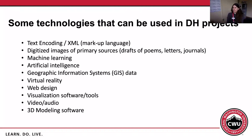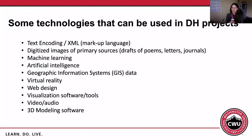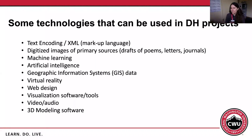Here are some examples of technologies that can be used. Text encoding, which I already mentioned, uses a markup language like XML to add tags to a piece of text. You can then use those tags to bring together information about those texts — like the instance of a particular word — and use visualization software to represent how often a word is used or the correlation between one word and another. I'll show you an example of that using software called Voyant in a little bit.